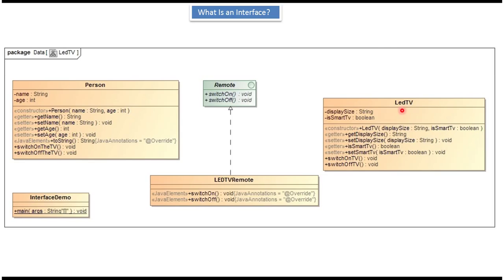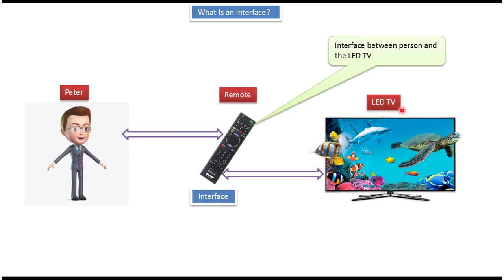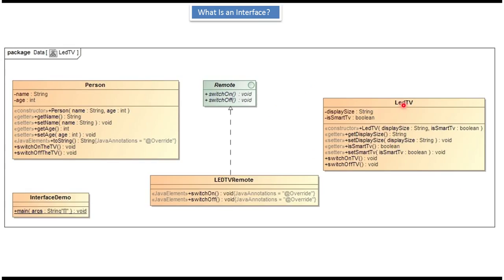Here I have defined the LED TV class which represents the LED TV. It has two properties: display size and is smart TV. I have defined getter and setter methods for these two properties. It also has an LED TV constructor, and using that we can create an LED TV object. It has two methods: switch on TV and switch off TV.